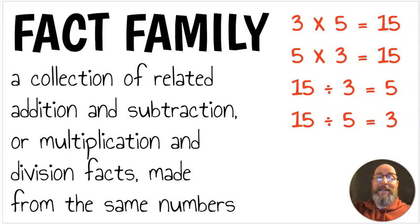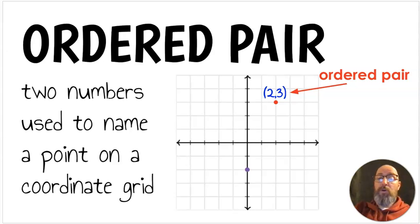Fact family. It's a collection of related addition and subtraction or multiplication and division facts made from the same numbers. So I have some fact families here for multiplication and division. Three times five equals fifteen. Five times three equals fifteen. Fifteen divided by three equals five. Fifteen divided by five equals three. And really, it's almost going forwards and backwards. So it's a collection of related addition and subtraction or multiplication and division facts made from the same numbers. Ordered pair. Two numbers used to name a point on a coordinate grid. So this is a coordinate grid. I have a dot or a point, and the ordered pair is right here, two and three, because if I count over two and I go up three, I get the ordered pair. Two numbers used to name a point on a coordinate grid is an ordered pair.